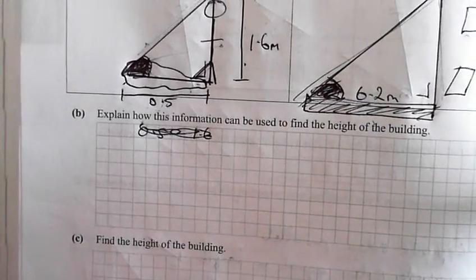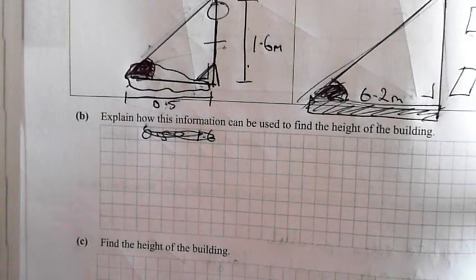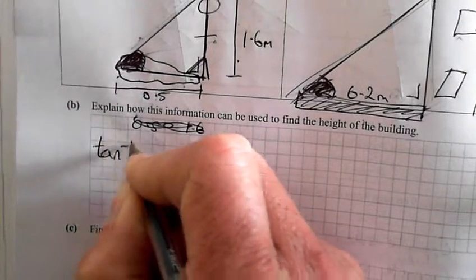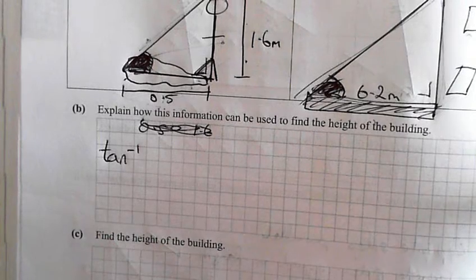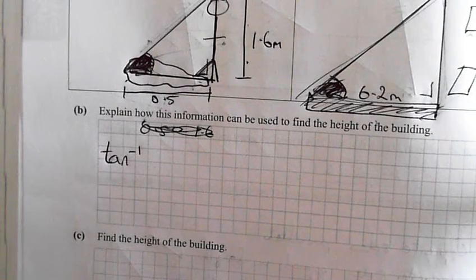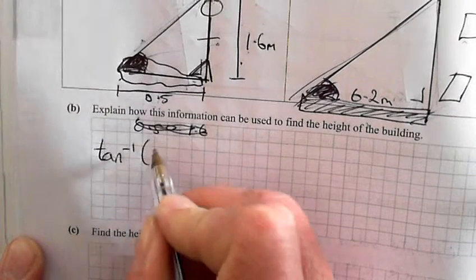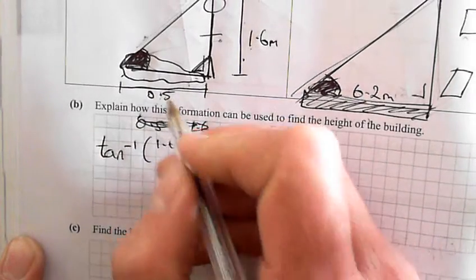You do use tan, but tan what? What other button do we press? Tan minus 1, that's it. So tan minus 1 and opposite over adjacent. Tan minus 1, which is the opposite? 1.6 over adjacent 0.5.